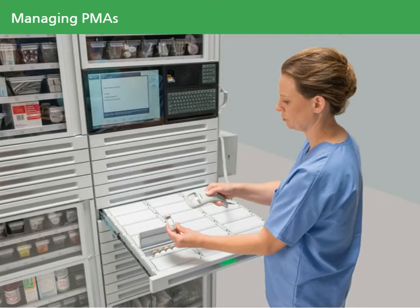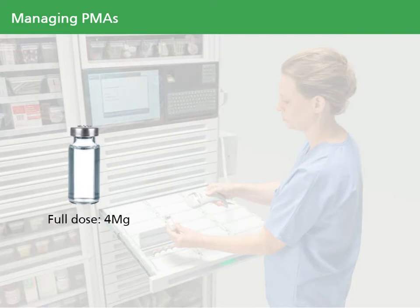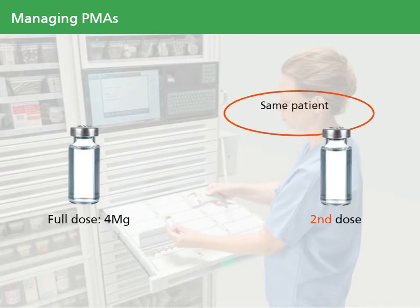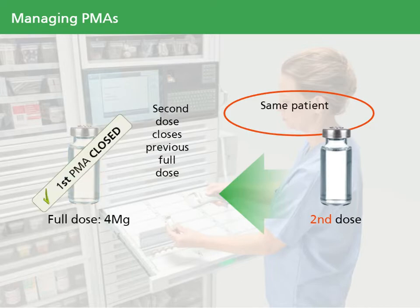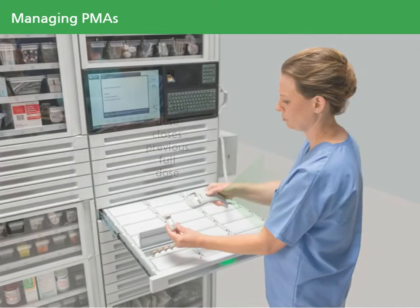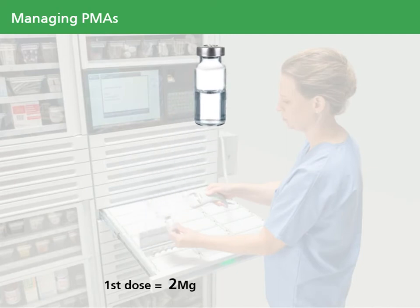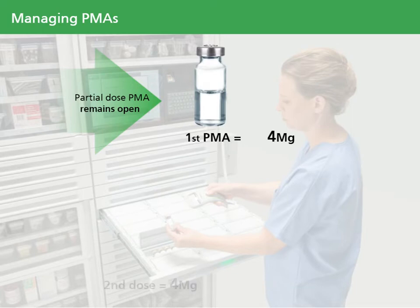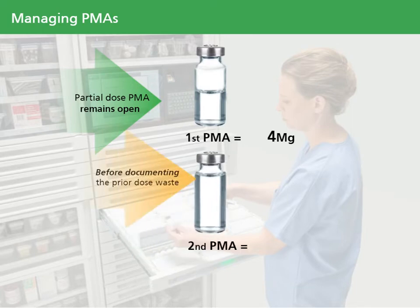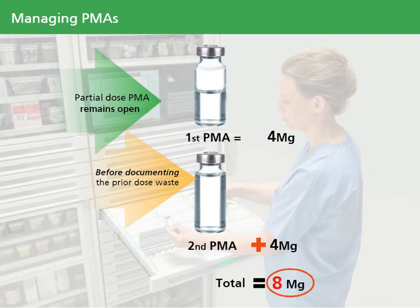When you dispense an item with the intended dose of full package size — for example, a 4 mg vial of morphine — issue the full dose, and then come back to dispense another 4 mg vial for the same patient. The first PMA is automatically closed. However, if you dispense a 4 mg vial of morphine with the intended partial dose of 2 mg, the system will keep this PMA open until you complete waste documentation. If you dispense another 4 mg of morphine prior to completing waste documentation, the outstanding amount will be cumulative — the system will add the two doses together as 8 mg and will expect to waste 4 mg.